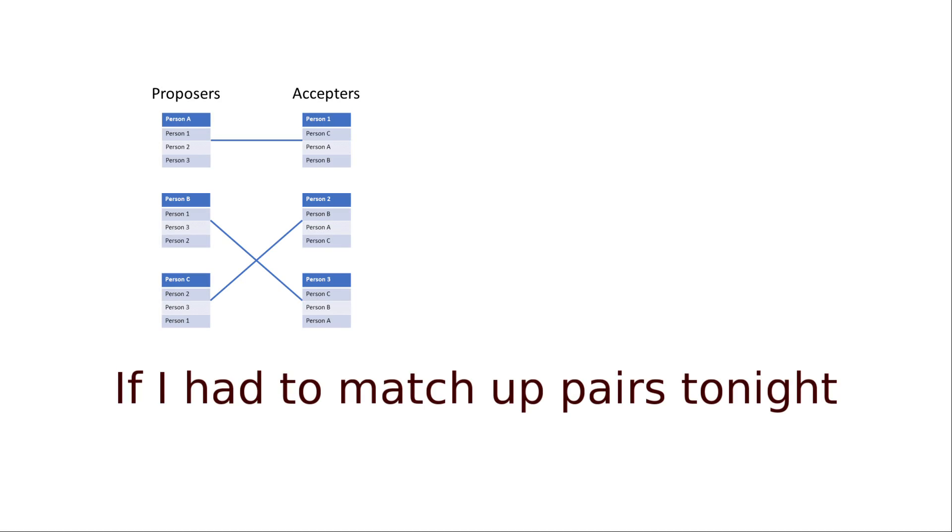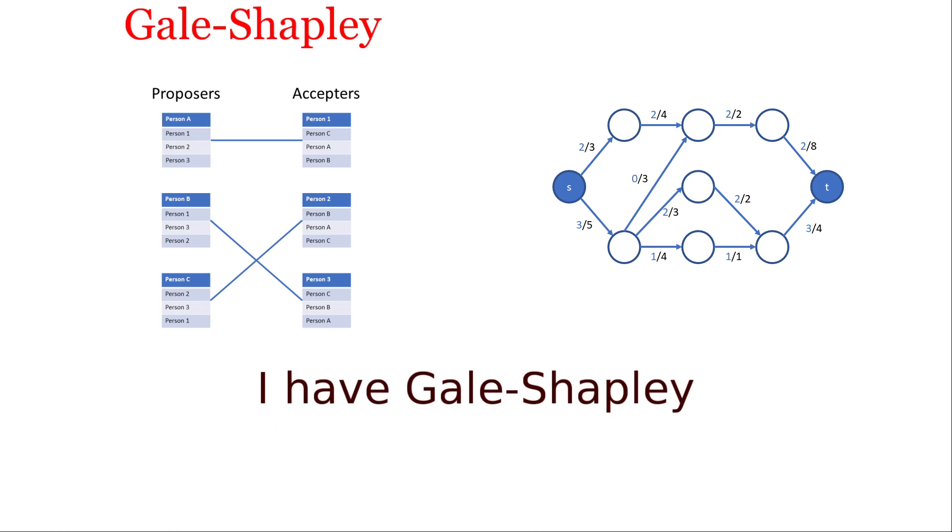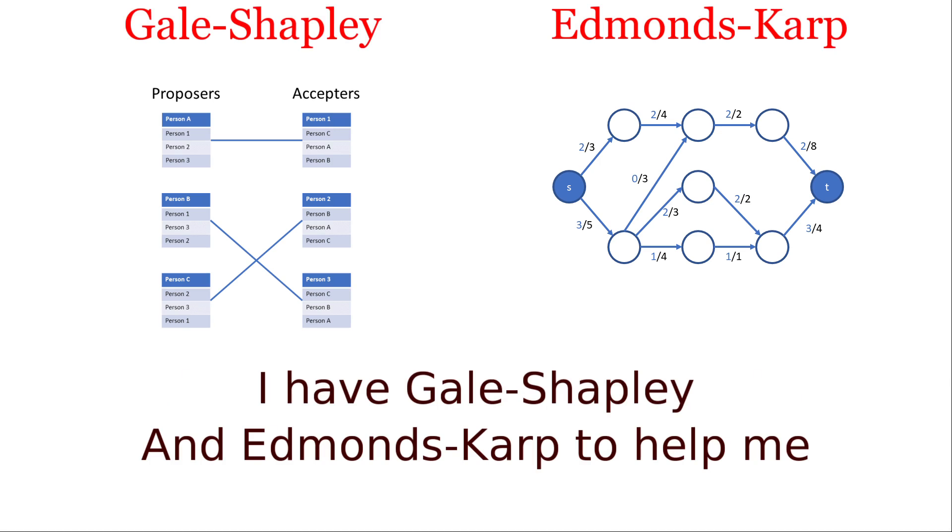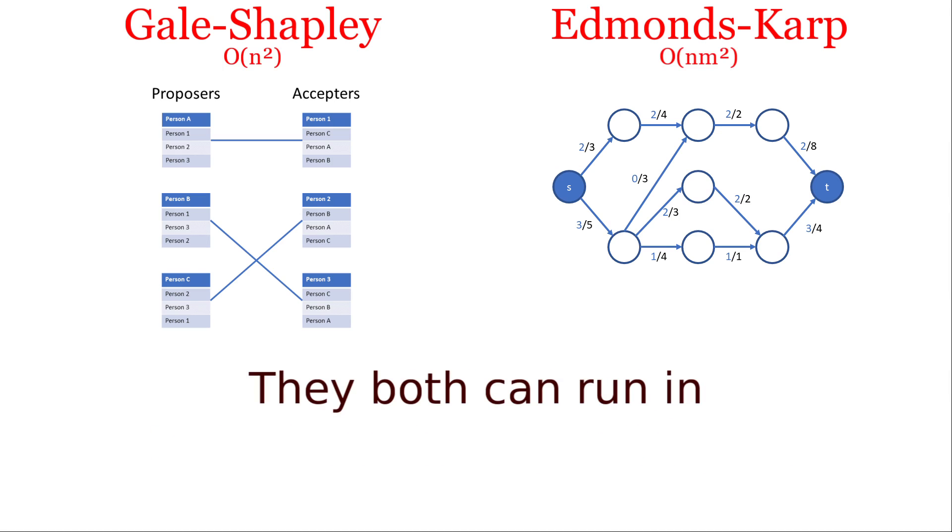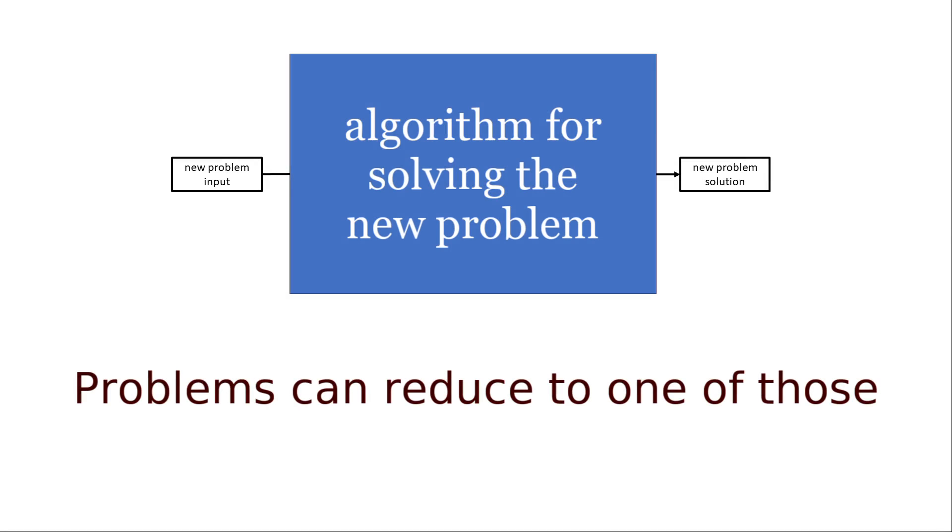If I had to match up pairs tonight or maximize the flow from left to right, I have Gale-Shapley and Edmonds-Karp to help me. They both can run in polynomial time. Problems can reduce to one of those.